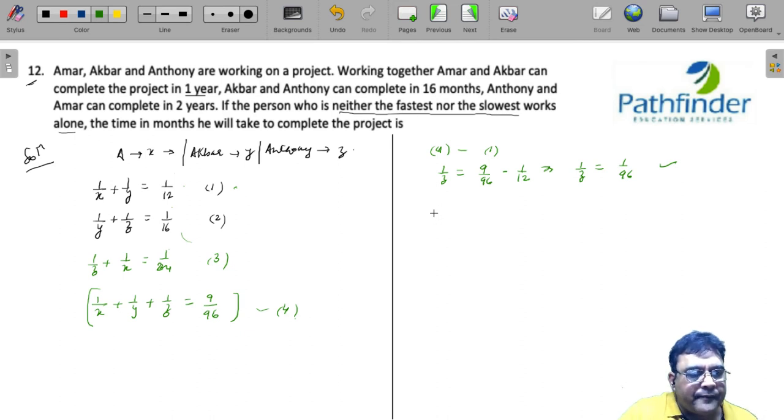If I want to find out how much time will Amar take, so I need to find out 1 by X. So I will need to do equation 4 minus equation 2, which will be 9 by 96 minus 1 by 16, which means 1 by X is 3 by 96. So on his own, Amar will do the work in 32 days. And we have already found for Anthony as 96 days.